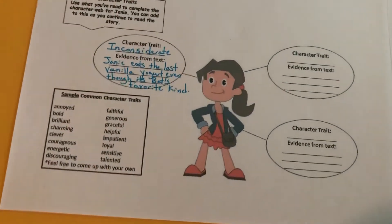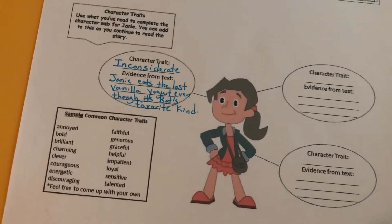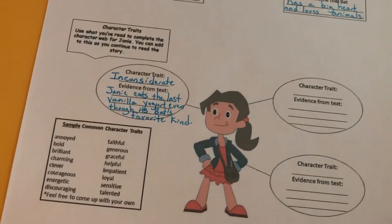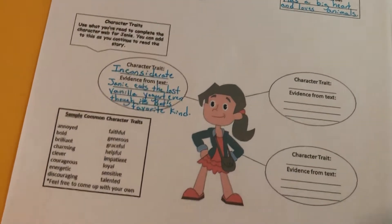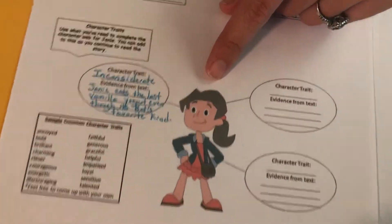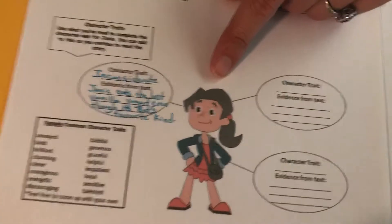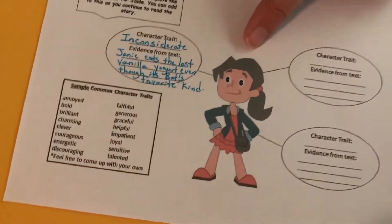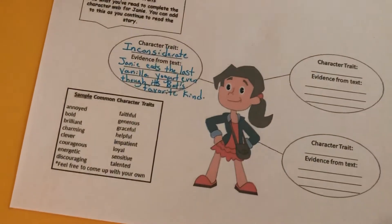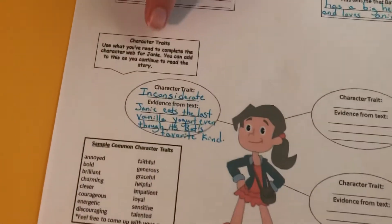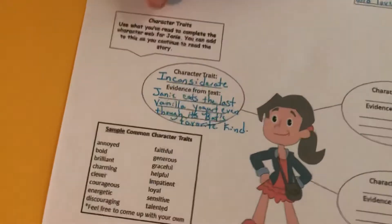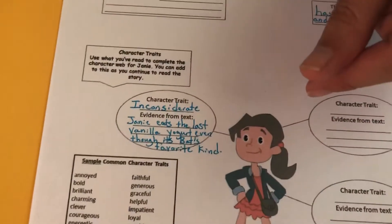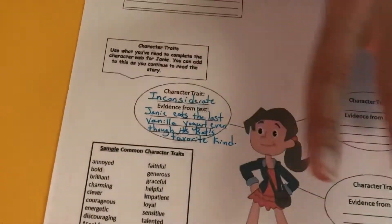Now let's look at the next activity on this page, and that's looking at Janie and Janie's character traits. Now Janie is very different from Bat, at least in the beginning of the book. It was really hard for me to pick a character trait for Janie because Janie hasn't been very nice so far in these first few chapters. I don't like giving negative character traits, but for Janie it's kind of what fit. The instructions tell us to use what you've read to complete the character web for Janie, and you can add to this as you continue to read the story. If you want to go back and change anything, you can.